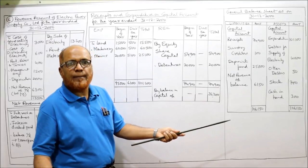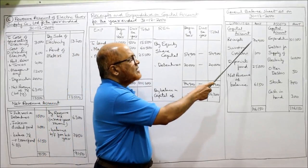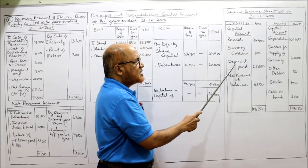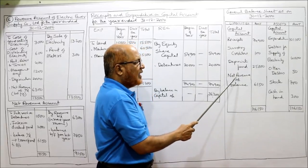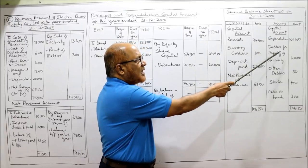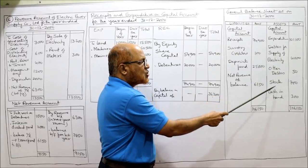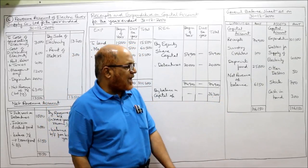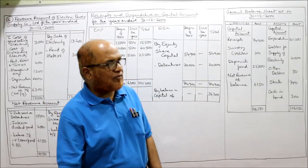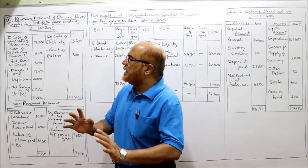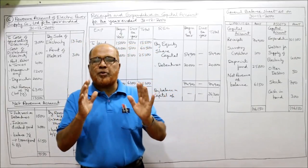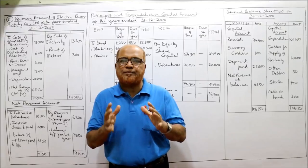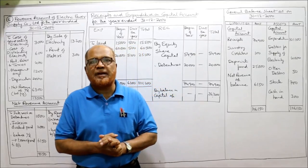All items have been taken. Capital account receipts, capital account expenditure, sundry creditors, depreciation fund, net revenue account balance on the liability side; debtors for supply of electricity, other debtors, stock, and cash on the asset side. The balance sheet tallies at 1,06,150. All six main problems on electricity company financial statements have been completed — covering revenue account, net revenue account, capital account, and general balance sheet.